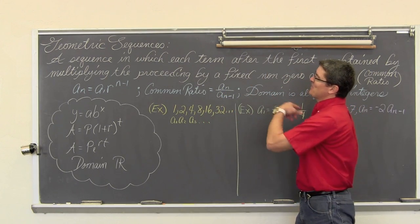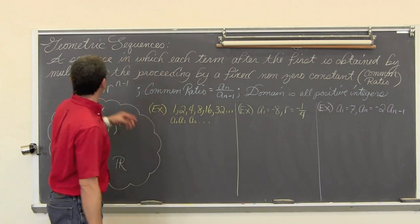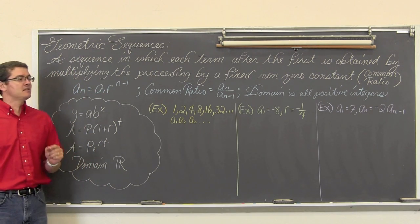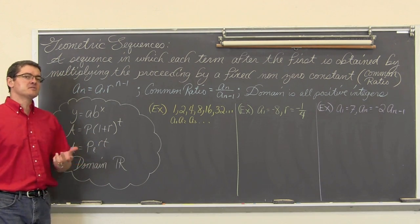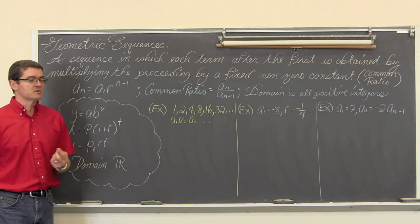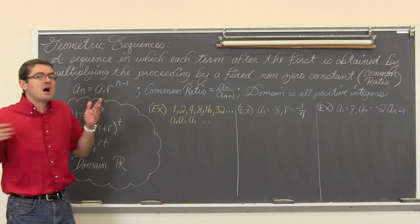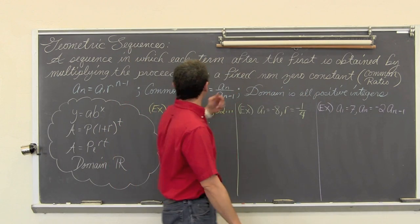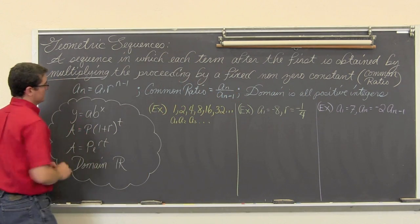A sequence in which each term after the first is obtained by multiplying the preceding term by a fixed non-zero constant. I just posted a couple of videos about working with arithmetic sequences; now we are moving on to geometric. So instead of constantly or repetitively adding, now we are repetitively multiplying.